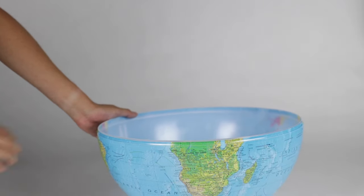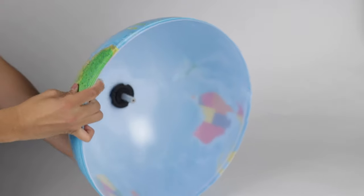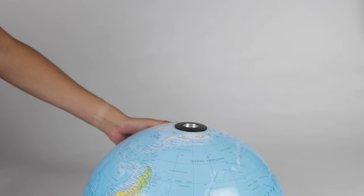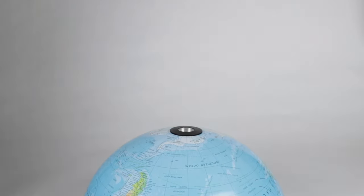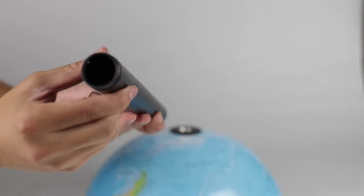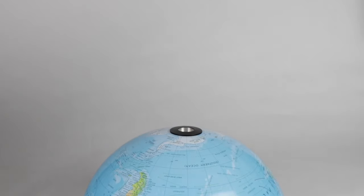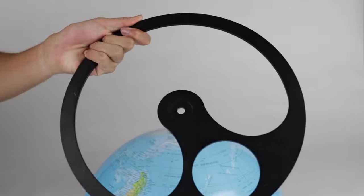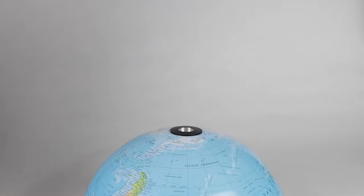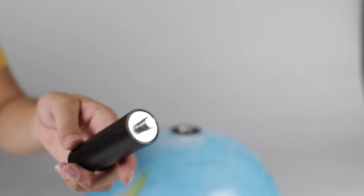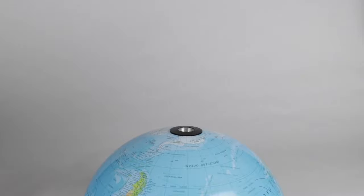Turn what has been built so far over so the flat part of the hemisphere is on the ground. Locate Part U, a long black metal rod, Part M, a large thin black disc with a smaller circle and U-shape cut out of it, and Part V, a shorter black metal rod.